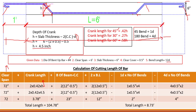Now let's put in the values. Clear span = 6 feet = 72 inches. Plus crank length: 2 × 0.42 × H (45° angle), where H = 4.5 inches, giving 3.78 inches. Plus 2 × (breadth of beam − concrete cover) = 2 × (12 inches − 0.5 inches) = 23 inches. Plus 2 × bend length = 2 × 12d = 2 × 12 × 0.5 = 12 inches. Minus 1D × 4 (45° bends) = 2 inches. Minus 4D × 2 (180° bends) = 4 inches.